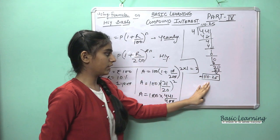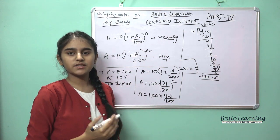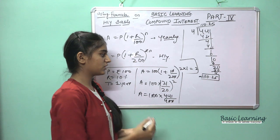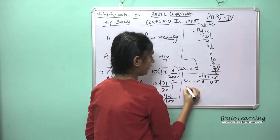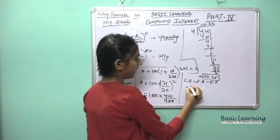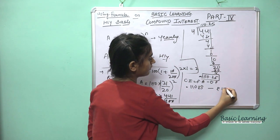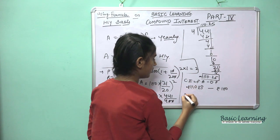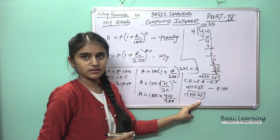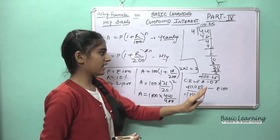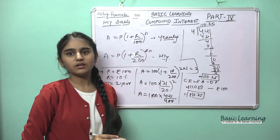This is the amount. If the question also asks for compound interest, apply the formula: CI = Final Amount − Original Principal. Our final amount is Rs. 110.25 minus Rs. 100, which gives CI = Rs. 10.25. The amount is Rs. 110.25 and compound interest is Rs. 10.25. I hope this example is clear.